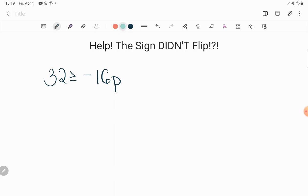And yet the answer key has the same sign. Instead of what I expected, the answer said P is greater than or equal to negative two. She saw that the inequality symbol in the problem was the same as the answer.